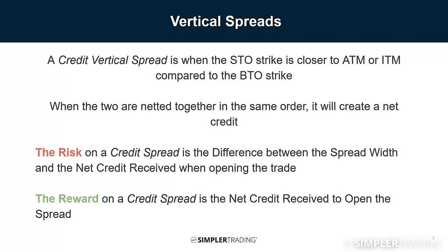A credit vertical spread is kind of the opposite. A credit spread is when the sold-to-open strike is closer to at-the-money or in-the-money compared to the bought-to-open strike. When the two are netted together in the same order, it will create a net credit. The risk on a credit spread is the difference between the spread width and the net credit received when opening the trade.